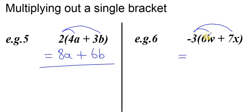so a negative times a positive is a negative, so negative 18w. And again a negative times a positive term will give a negative, so negative 3 times 7x is 21x. Final answer on this question is now complete.